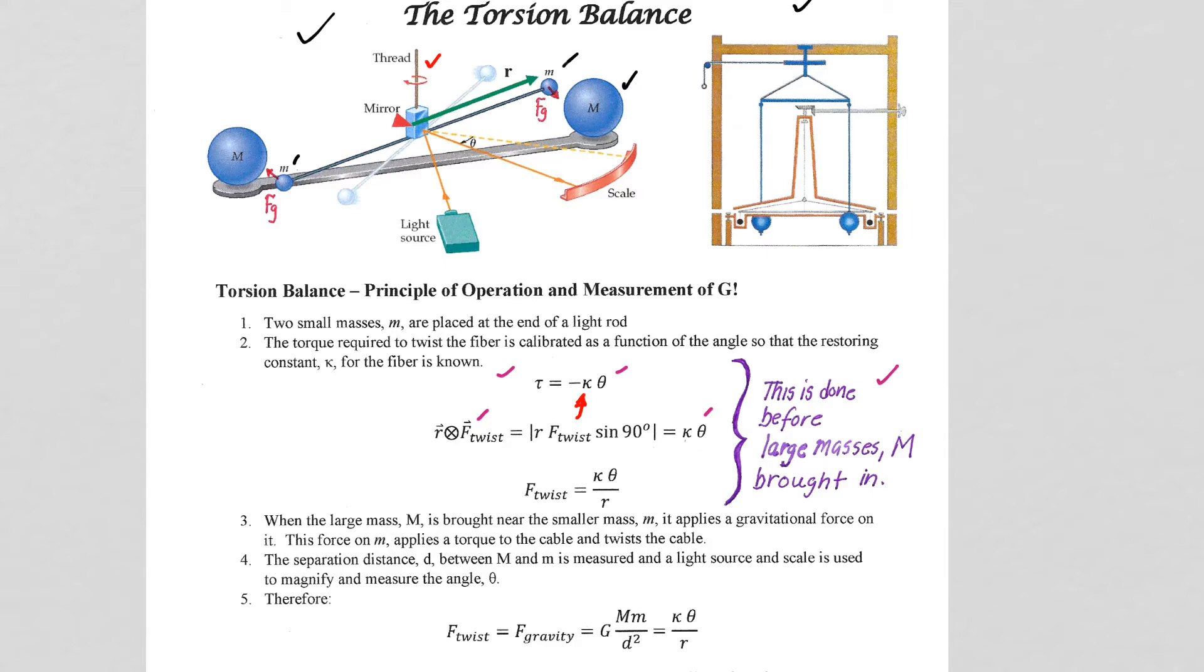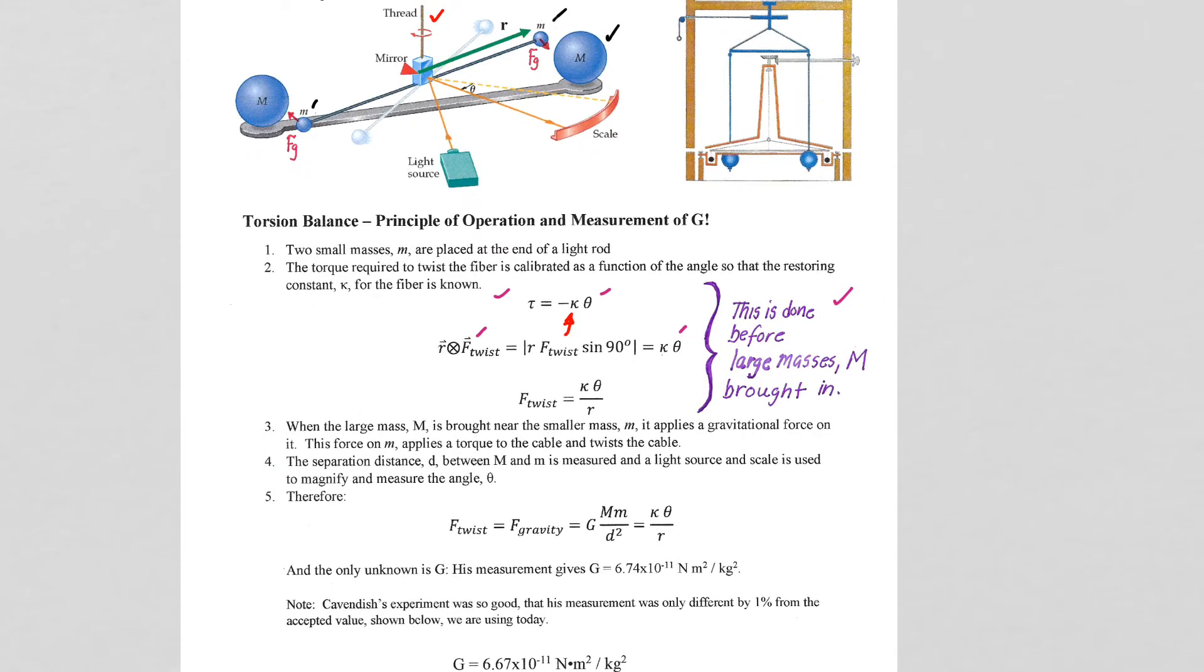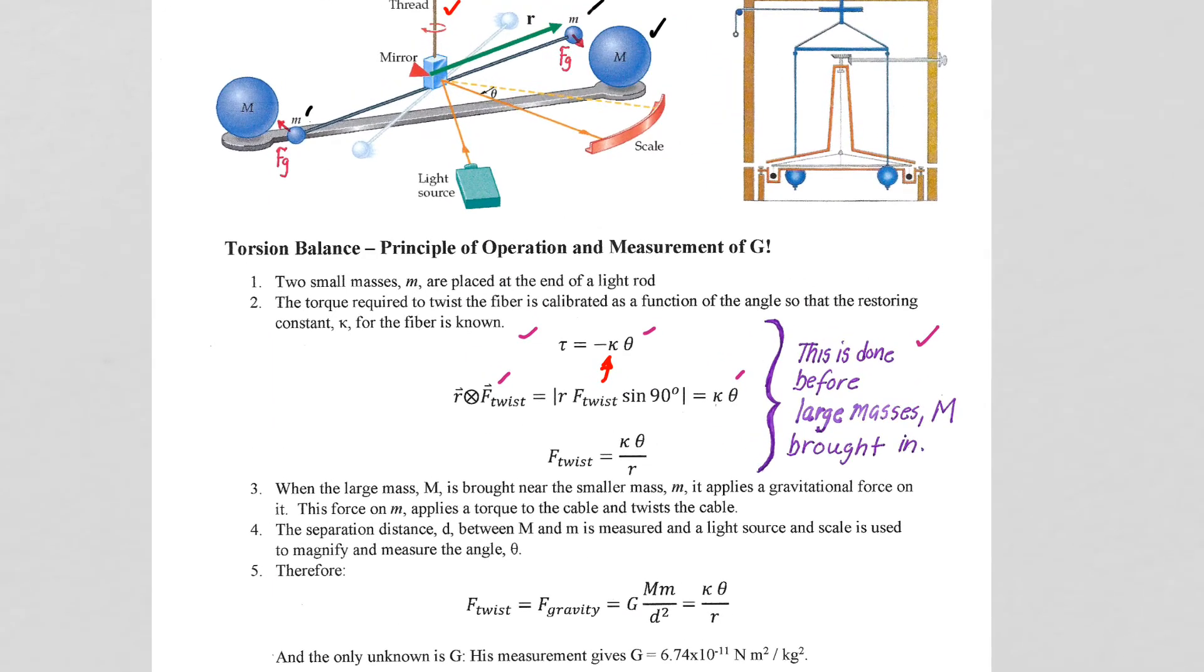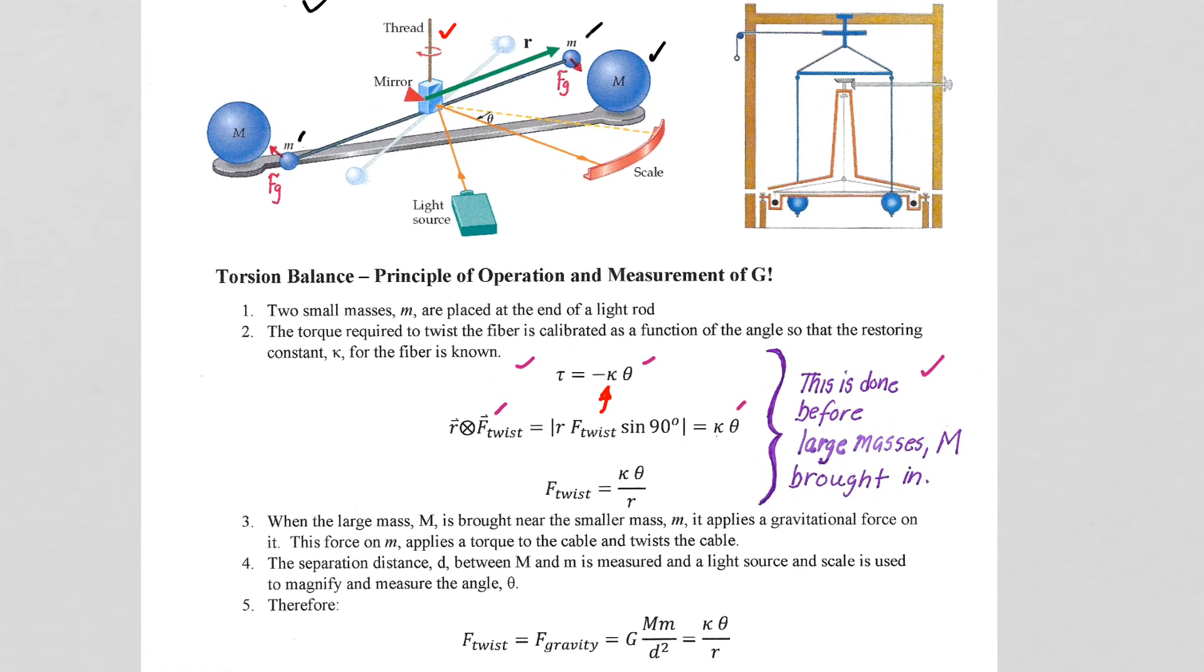And we're going to see why that was essential for him in a moment here. So what he then did was bring in these large metal spheres and looked at how much the fiber twisted due to the gravitational force pulling sideways on these small masses.